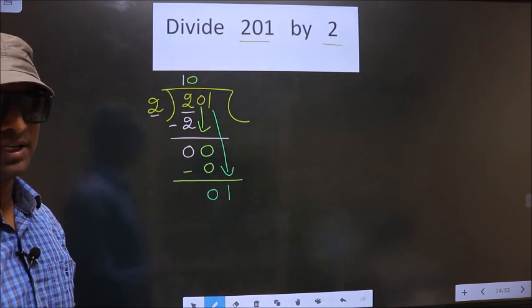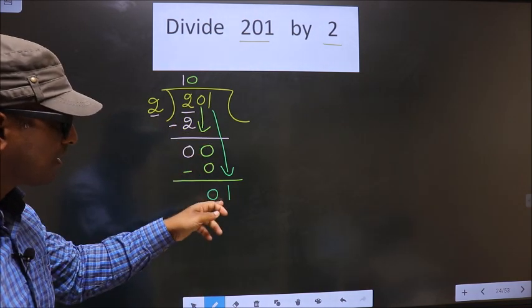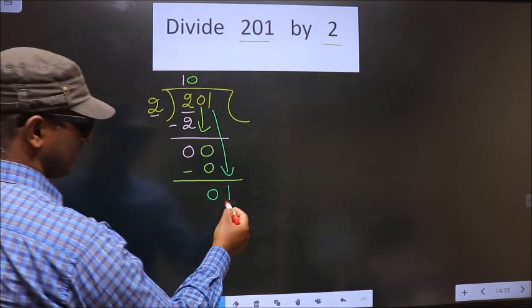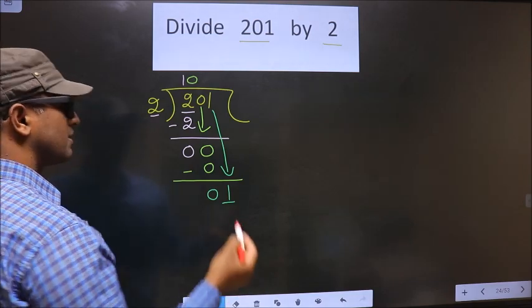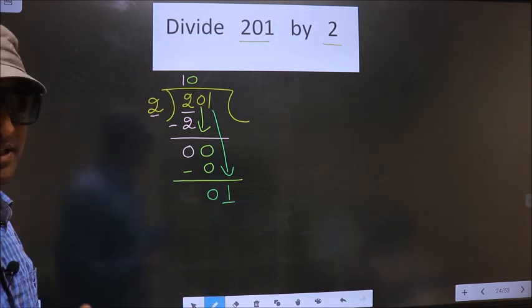Okay, so far, this is where the mistake happens. Just now, you brought this number down. Now, here 1 is smaller than 2. So, what many do is, they put a dot here and take 0 here. Which is wrong.